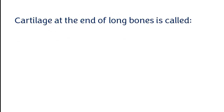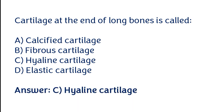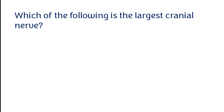Cartilage at the end of long bones is called: calcified cartilage, fibrous cartilage, hyaline cartilage, or elastic cartilage. The correct answer is option C — cartilage at the end of long bones is called hyaline cartilage.